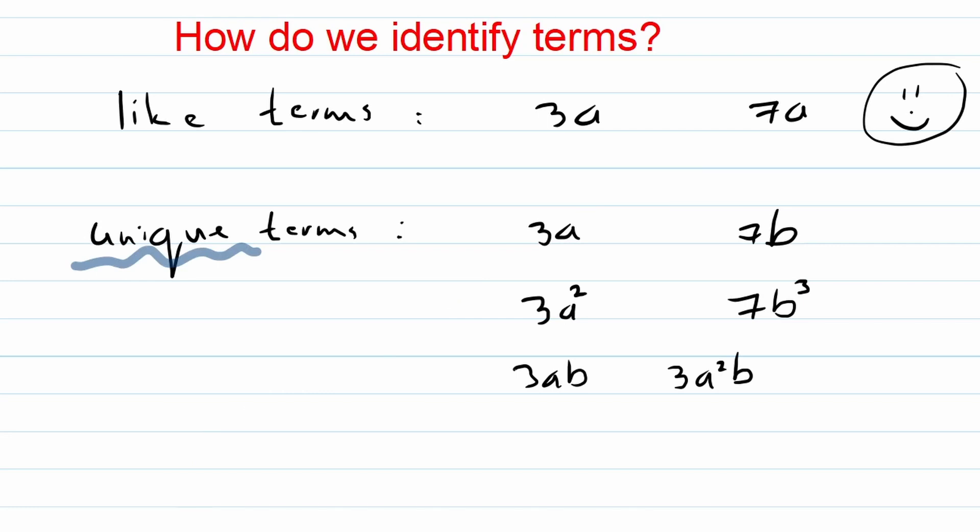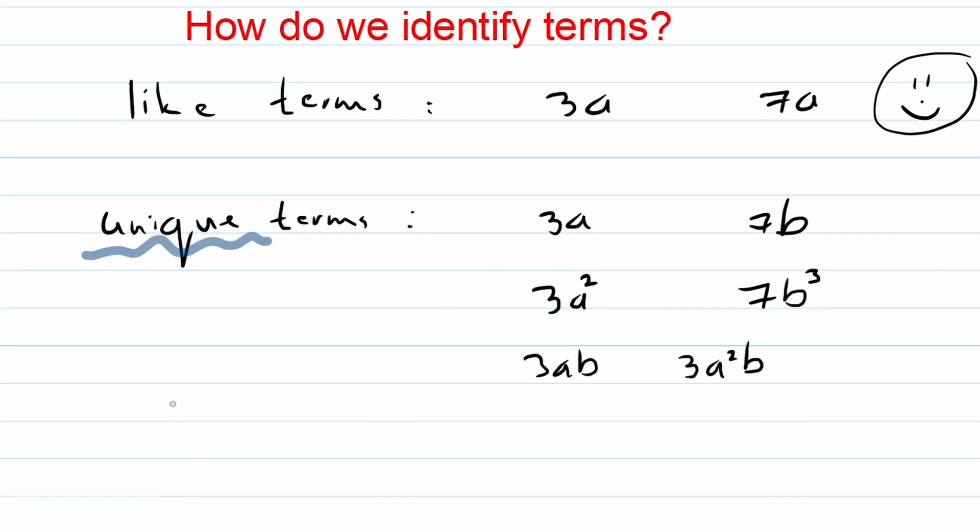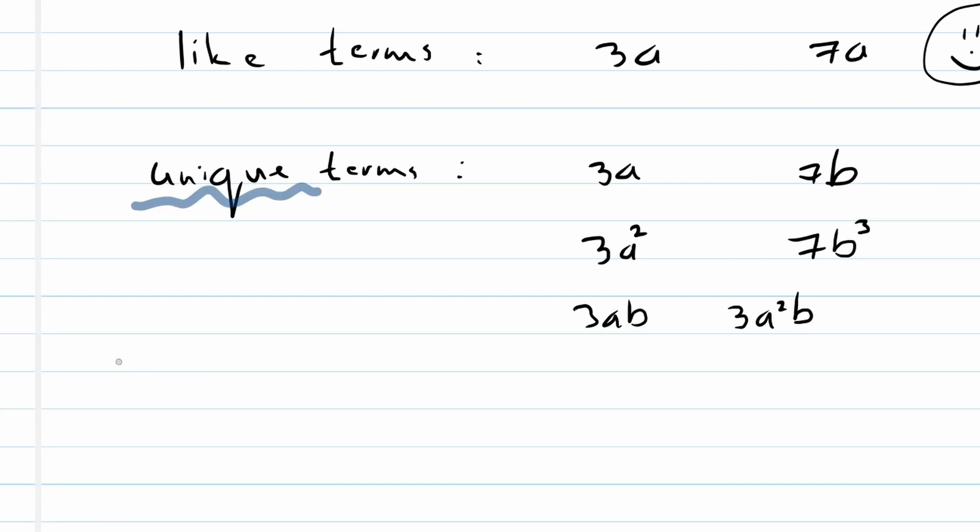Okay, so that's the very first thing. The second thing we need to talk about is how do we know how many terms there are? Now I'll write down a few examples.